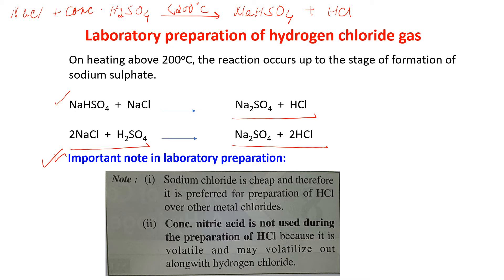Some important notes on laboratory preparation of HCl: sodium chloride is cheap and therefore it is preferred for the preparation of HCl over other metal chlorides — this is a very important question. Concentrated nitric acid is not used; only concentrated sulfuric acid is used. Concentrated nitric acid is not used during the preparation of HCl because it is volatile and may volatilize out along with hydrogen chloride.